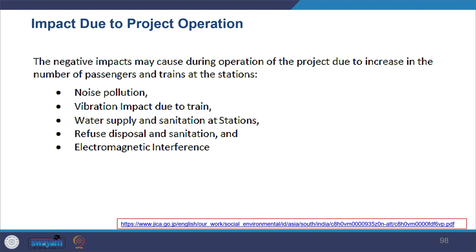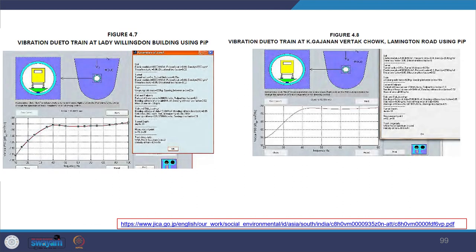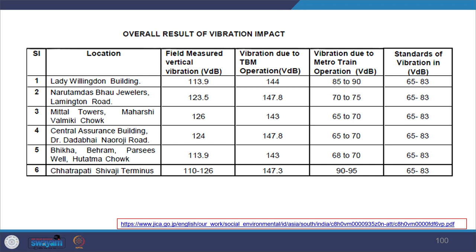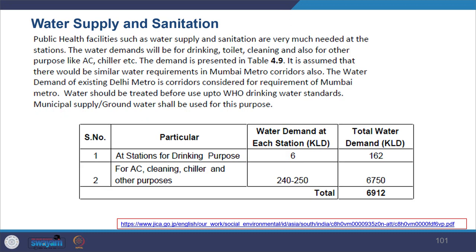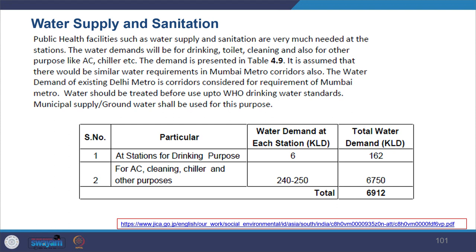Impacts due to project operations include noise, vibration, terrain impact, water supply and sanitation at stations, refuse disposal, sanitation, and electromagnetic interference. Impacts due to the depot operation include washing lines, operations and maintenance workshops and offices — leading to impacts on water supply, effluent treatment, oil pollution, noise, surface drainage, solid waste, and tree cutting.